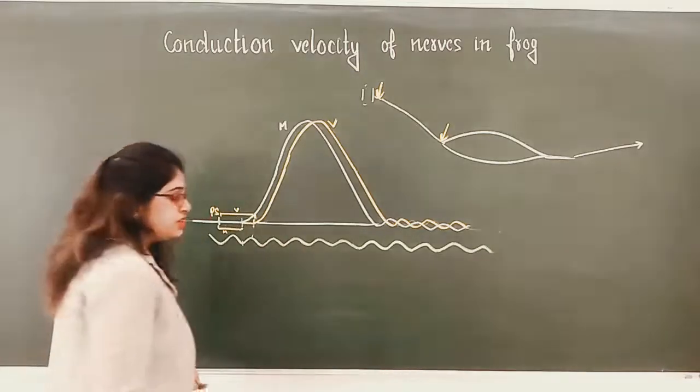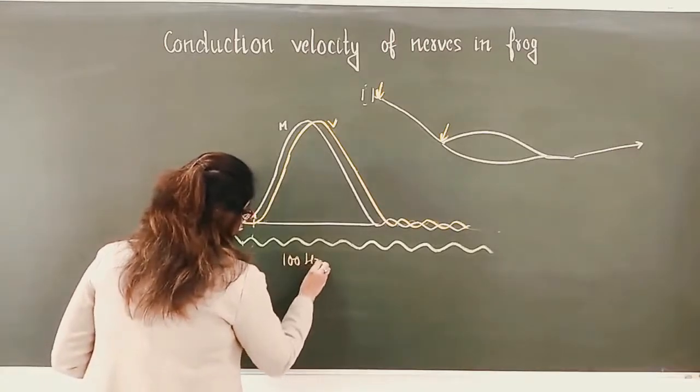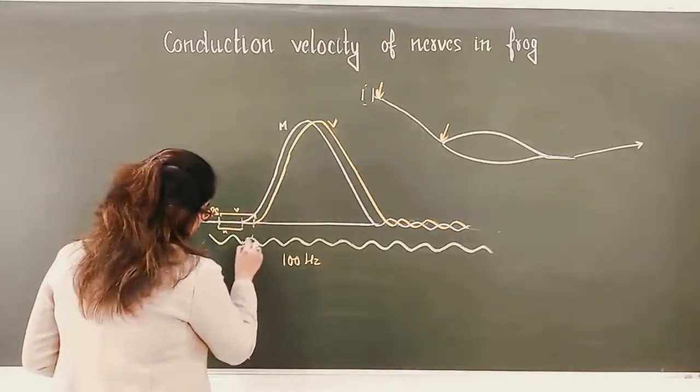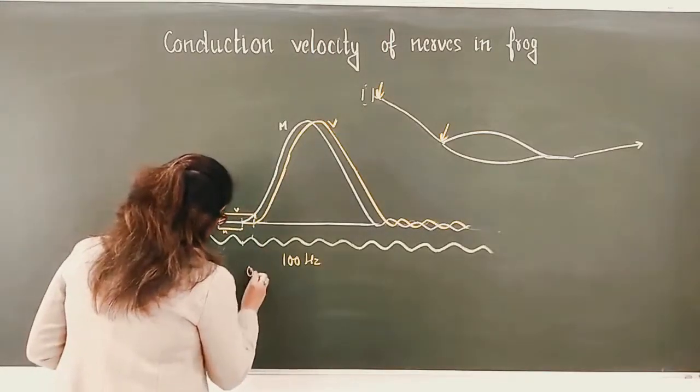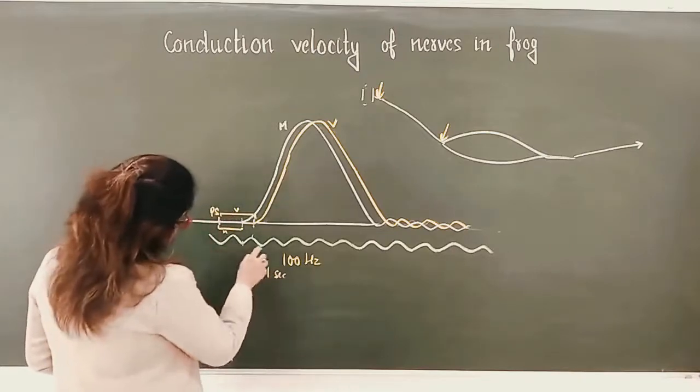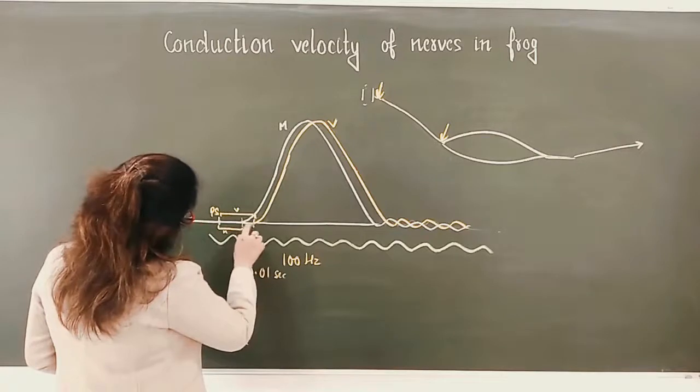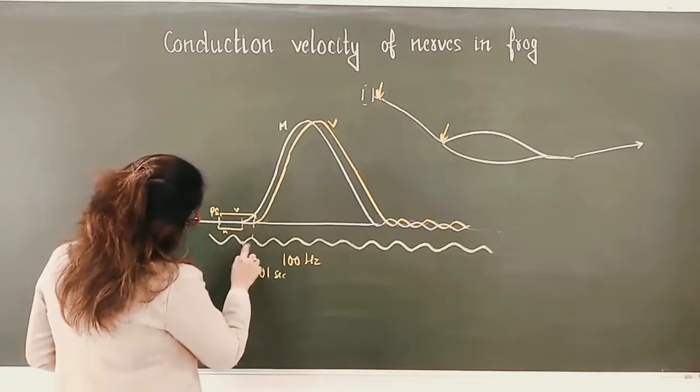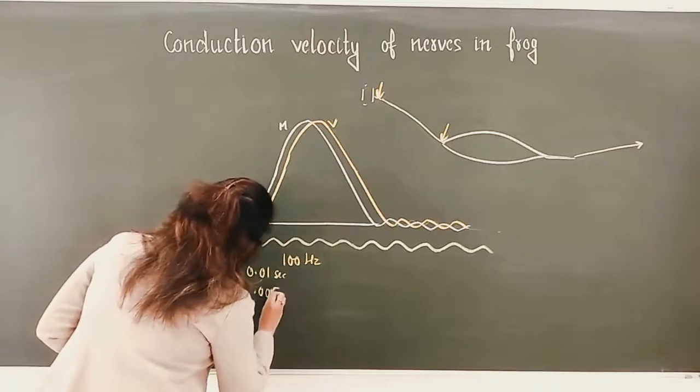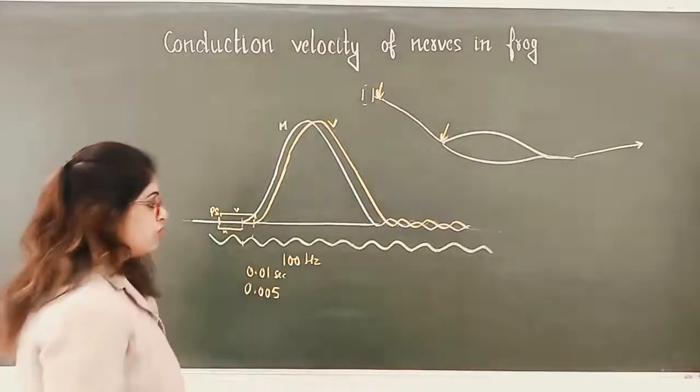This is the time tracer being used, and mostly that time tracer is of 100 hertz. So the length of one complete cycle is 0.01 seconds. Here, half of the cycle is complete. This difference is equal to half of the cycle, which means this is equal to 0.005 seconds.